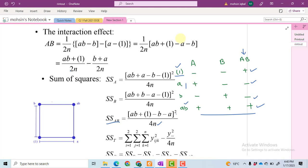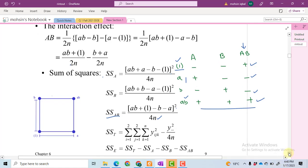Likewise, you will have to take the square of each and every contrast, and then divide the contrast by 4 multiplied by N. It will give you sum of squares. So in this way we can calculate the sum of squares for the 2k factorial design.